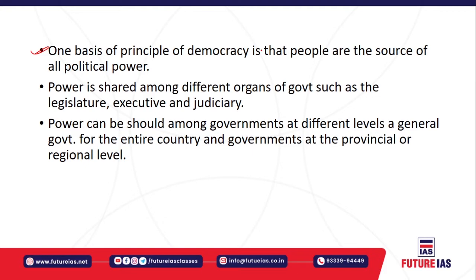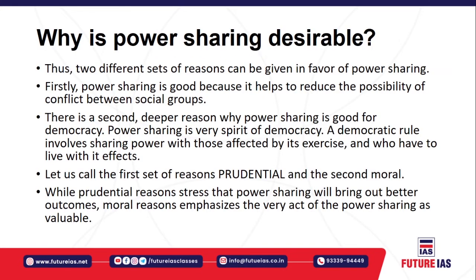Power is shared among the different organs of the government. The three organs are: the executive, which executes policy; the legislature, which enacts legislation in parliament; and the judiciary, which interprets those laws and enforces the rule of law. Power should also be divided among different levels of government — central, state, and local authorities like the panchayati raj system or urban local self-government structures.